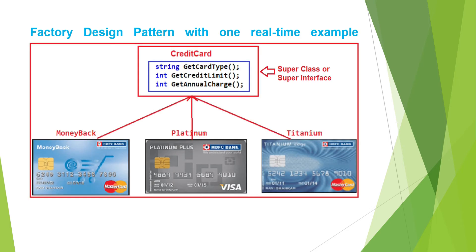Suppose we want to develop an application for showing the credit card details. Please have a look at the diagram. We have three credit card classes: MoneyBack, Platinum, and Titanium. All these three classes are the subclasses of the CreditCard superclass, or you can say the CreditCard superinterface. The CreditCard superinterface has three abstract methods: getCardType, getCreditLimit, and getAnnualCharge. The subclasses — MoneyBack, Platinum, and Titanium — implement the CreditCard superinterface and provide implementation to all three methods.